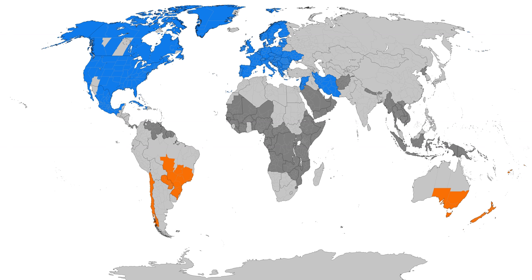North and south of the tropics, daylight lasts longer in summer and shorter in winter, with the effect becoming greater the further one moves from the tropics. By synchronously resetting all clocks in a region to one hour ahead of standard time, individuals who follow a year-round schedule will wake an hour earlier, begin and complete daily work routines an hour earlier, and have an extra hour of daylight after their workday. However, they will have one less hour of daylight at the start of each day, making the policy less practical during winter.